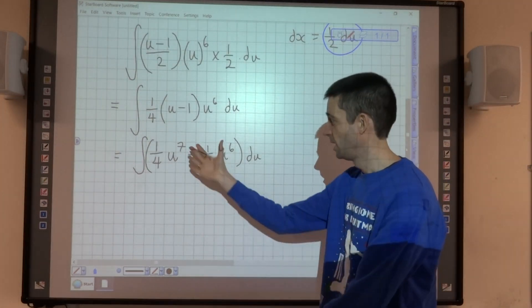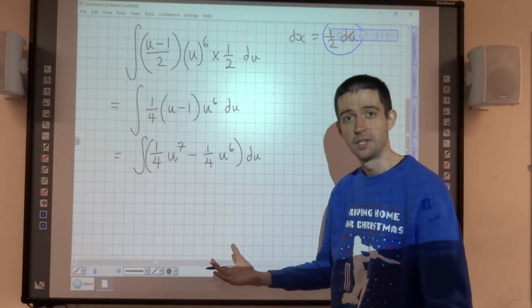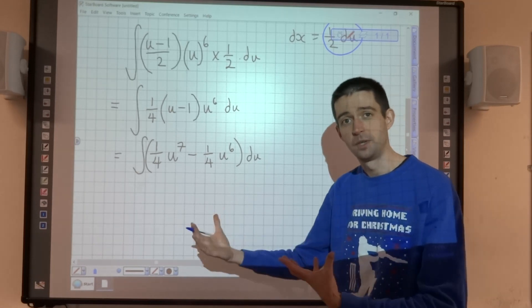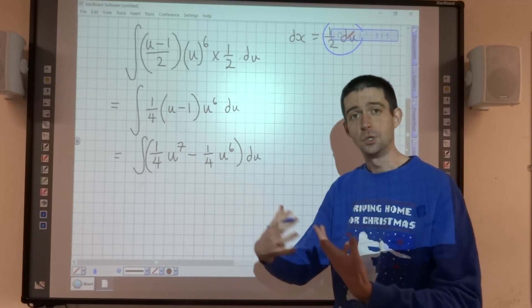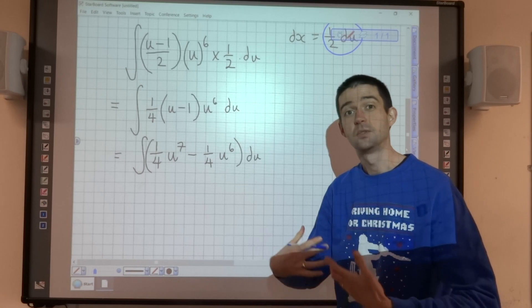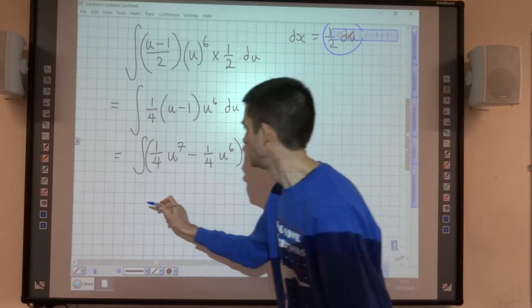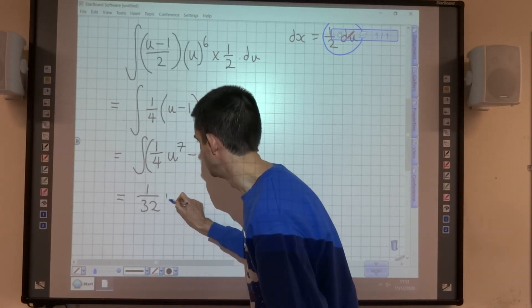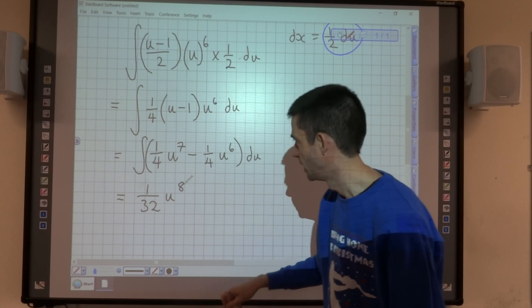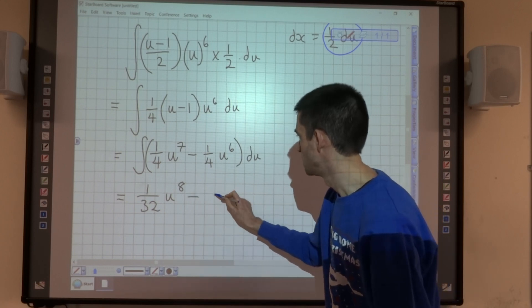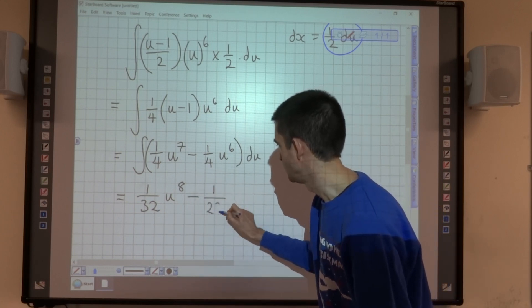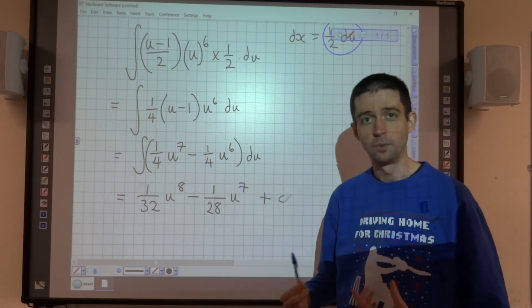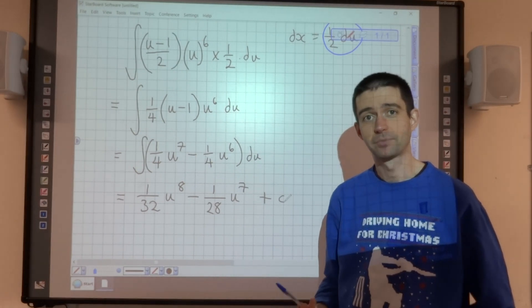I can integrate this by adding 1 to the power and dividing by the new power. And that is the point of integration by substitution. It's to start with something that's difficult to integrate, use a substitution to make it something that's more straightforward to integrate. So what we're going to get then is 1/32 u to the power of 8, so that's adding 1 and dividing by the 8, minus 1/28 u to the power of 7. And then not forgetting the plus C, because we've got no limits on this integration at the moment.